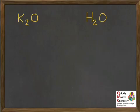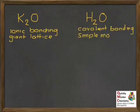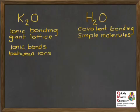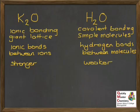Let's work through the explanation step by step. For the potassium oxide, we can say there's ionic bonding and a giant lattice structure. For the water, covalent bonding with simple molecules. In terms of what needs to be broken for a change of state, for the potassium oxide we're breaking ionic bonds between the ions. For the water, we're breaking hydrogen bonds between the molecules. Despite hydrogen bonds being the strongest type of intermolecular bonding, ionic bonds are stronger than any type of intermolecular bonding. So the potassium oxide has the stronger bonds that need to be broken, and the water has the weaker bonds to break.